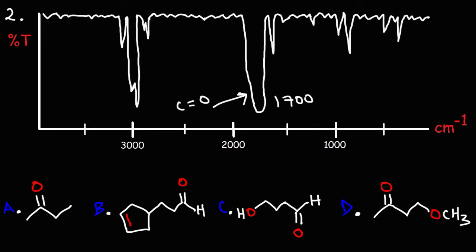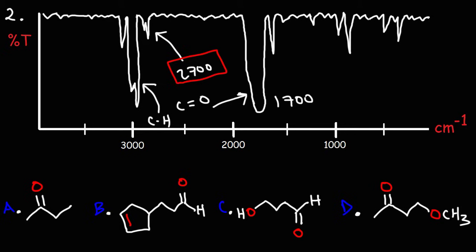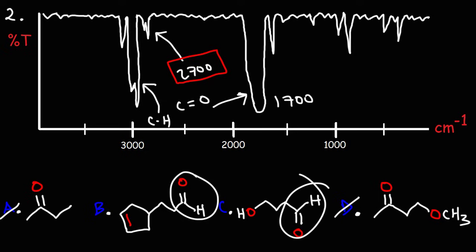What else can we identify in this graph? We do have our alkane C-H stretch, which is present in every molecule. But note that we have a signal here around 2700 — this is the aldehyde C-H stretch. So we know we don't have an ester, a ketone, or anything like that — we have an aldehyde. Thus, we can eliminate answer choice A, which is a ketone, and D, which is also a ketone.